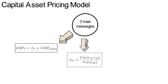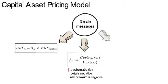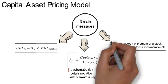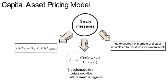The beta of an asset quantifies the amount of systematic risk that Asset A contributes to the well-diversified market portfolio. The third takeaway is that the CAPM reveals that high average returns are not earned by holding high variance stocks, but only if that stock carries a lot of systematic risk. So according to the CAPM, the expected risk premium of a stock is unrelated to the stock's idiosyncratic risk.